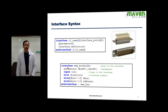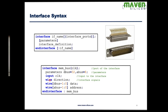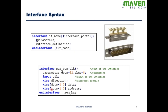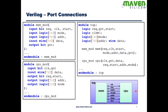Here is an example: the interface is named mem_bus. It has a port clock and end interface at the close. The identifier is optional. Parameters d_bus and a_bus have sizes of 32 bits and 8 bits respectively. Clock is an input port for the interface, and these are all the signals we will look at in the example.